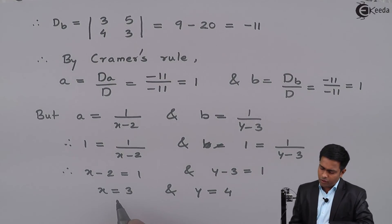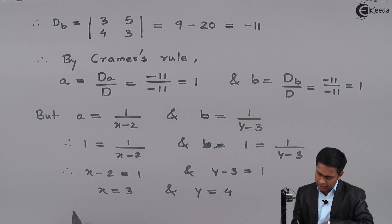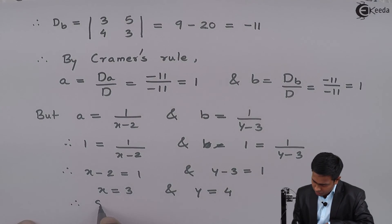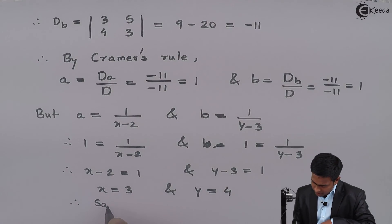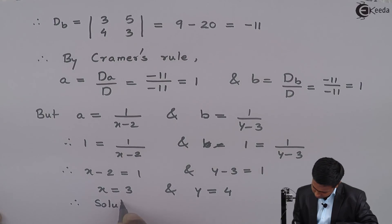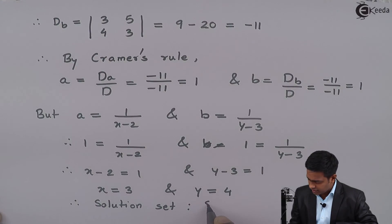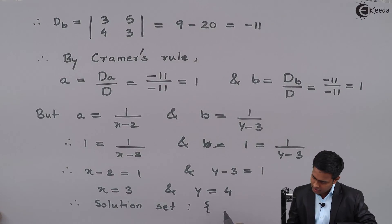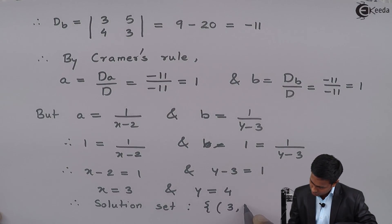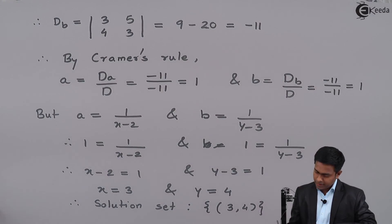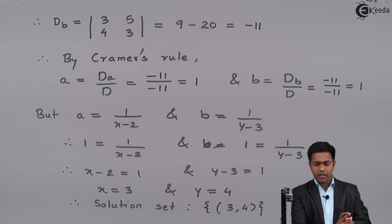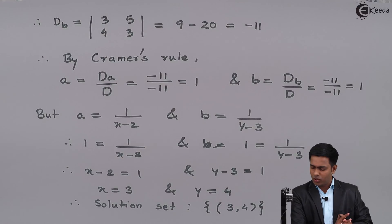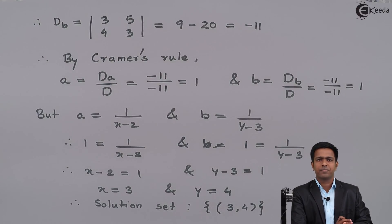So we got the values of x and y as 3 and 4. Therefore the solution set, written inside curly brackets, is {3, 4}. We have solved the given equations by Cramer's rule and got the values of x and y as 3 and 4. Thank you.